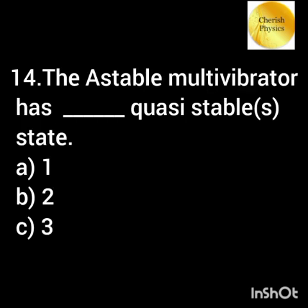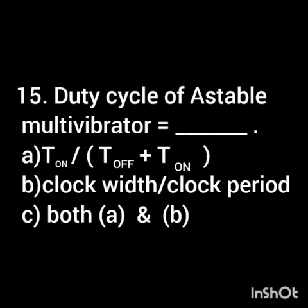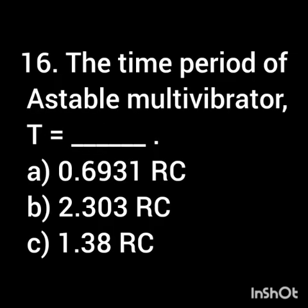The unstable multivibrator has dash number of quasi-stable states. The duty cycle of an astable multivibrator is — dash. The time period of an astable multivibrator is T equal to — dash.